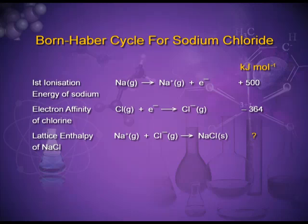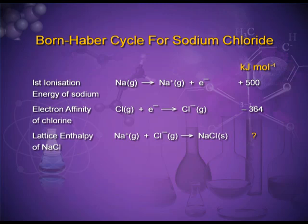Electron affinity of chlorine: chlorine in the gaseous state plus one electron gives chloride ion in the gaseous state. Electron affinity is the amount of energy released when an extra electron is added to the valence shell — this is the step in which energy is released. Now we have sodium ion in the gaseous state and chloride ion in the gaseous state. These oppositely charged ions form a strong bond and NaCl is formed. The sum total of all these energies gives the lattice enthalpy of sodium chloride.